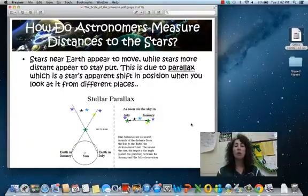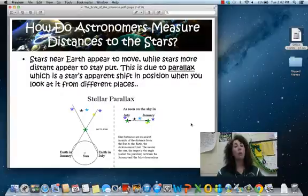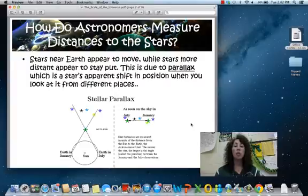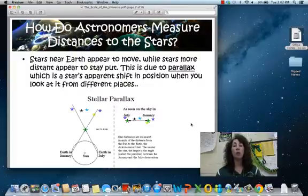Okay, so of course stars near Earth appear to move, but stars that are further away actually appear to move less or they seem to almost stay put. This is all because of a phenomena called parallax, which is just the star's apparent, so not really happening, apparent shift in position when you looked at it from different places. This is what we're going to be doing an activity on as well.